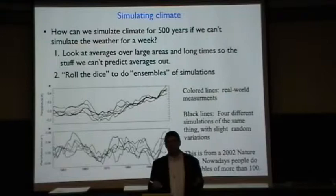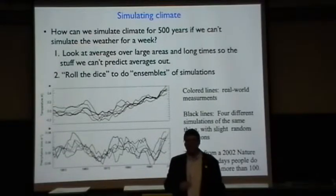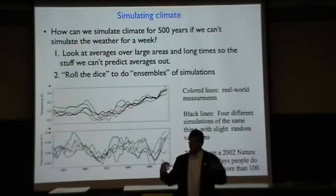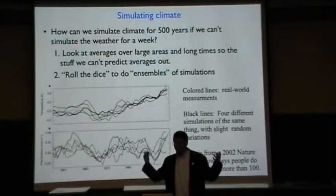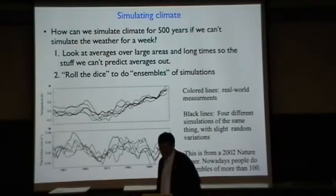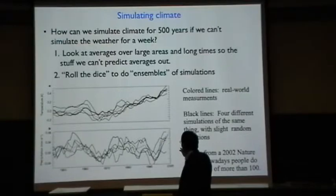You may not be able to say whether a tornado is going to hit a particular town in Kansas, but you might be able to say that the odds are good of, say, 10 tornadoes hitting Kansas next year, or something like that. Then we can also roll the dice to make this work better. This is called doing ensembles of simulations.